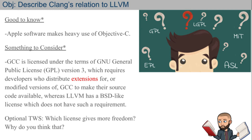GCC requires developers who distribute or modify it to make their source code available. LLVM has a BSD-like license, which means they don't have that requirement. So maybe Apple, being a big proprietary fan, is also going with LLVM for that reason — not just because developers can't make the hippo dance.